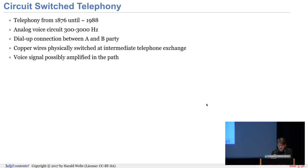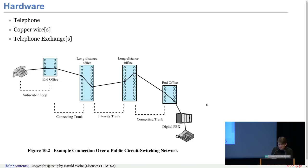Circuit-switched telephony — this is the telephony from 1876 until about 1988 with analog voice circuits over copper wires and dial-up connections between A and B. You have analog amplifiers possibly in the path, but the copper wires are physically switched at telephone exchanges. Structurally, we have a telephone at one end, a telephone at another end, and telephone exchanges or switches which actually switch the circuit — hence the term circuit-switched telephony — between A and B.